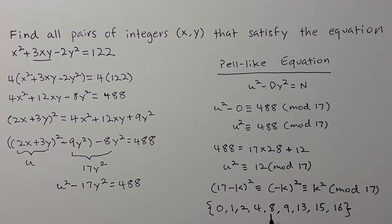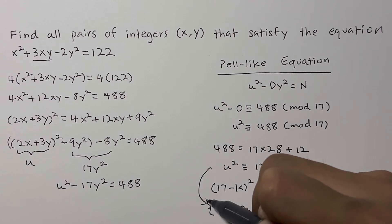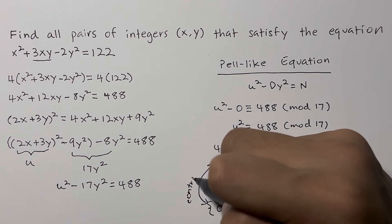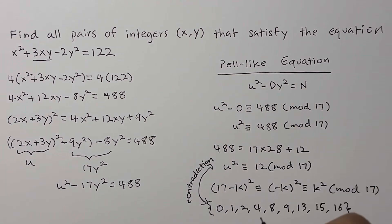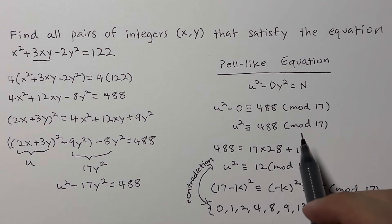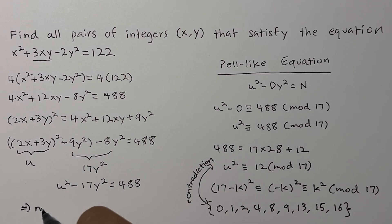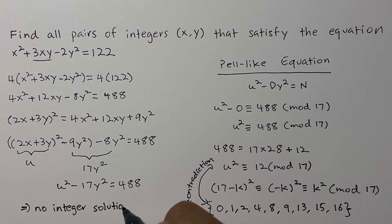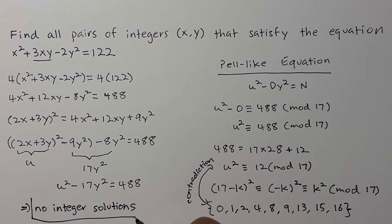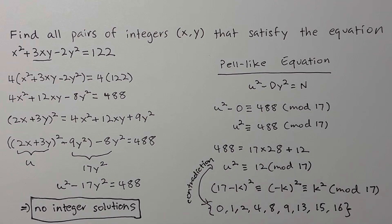So, the contradiction means that there are no integer solutions to this problem. Our original equation can only have integer solutions x, y if we can find an integer u that satisfies u² ≡ 12 (mod 17). We just proved that no such integer exists. Therefore, the answer to this question would actually just be no integer solutions. And that is how you solve this problem.